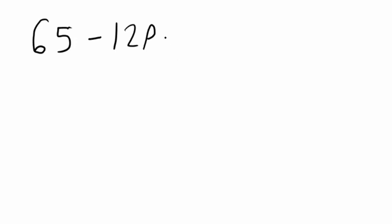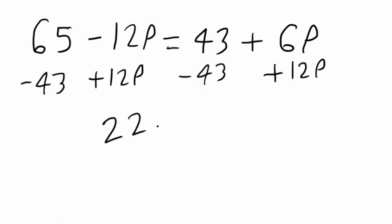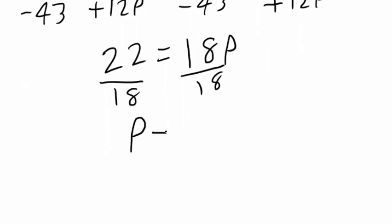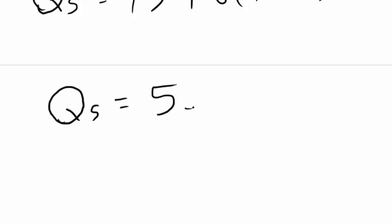Setting them equal: 65 minus 12p equals 43 plus 6p. Subtracting 43 from both sides and adding 12p to both sides gives 22 equals 18p. Dividing both sides by 18, we get a price of $1.22. Plugging that into the quantity supplied function — 43 plus 6 times 1.22 — gives a quantity supplied of 50.32.